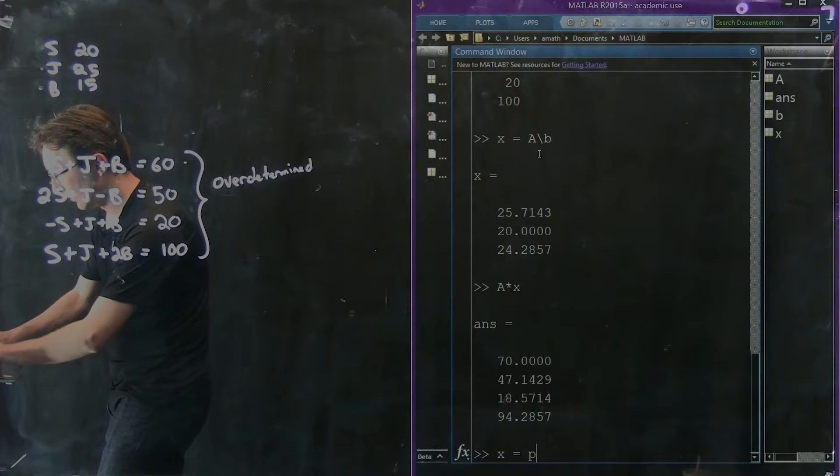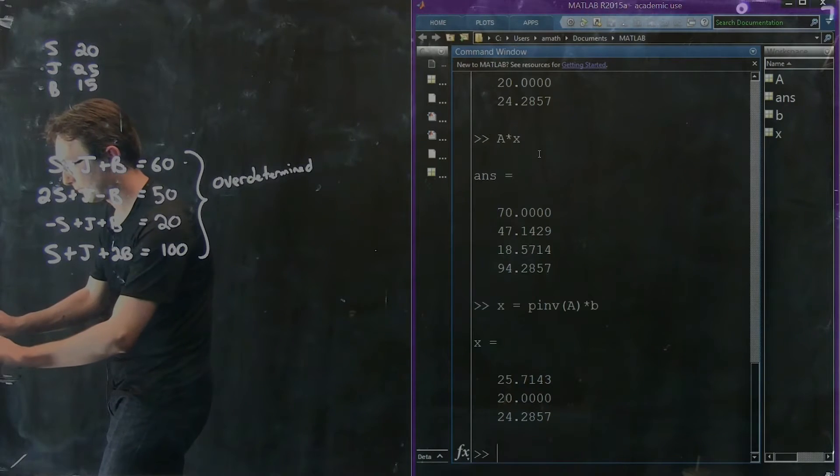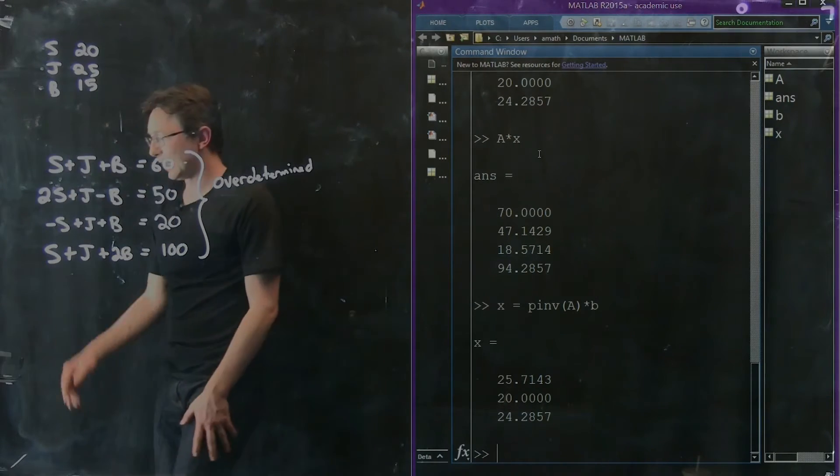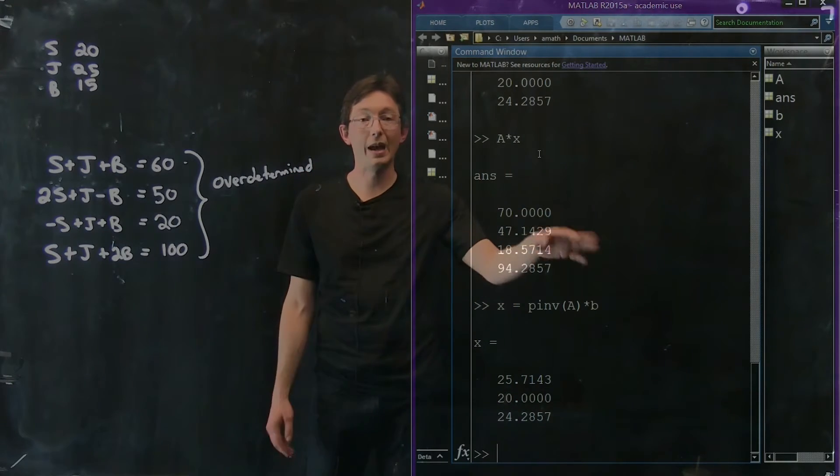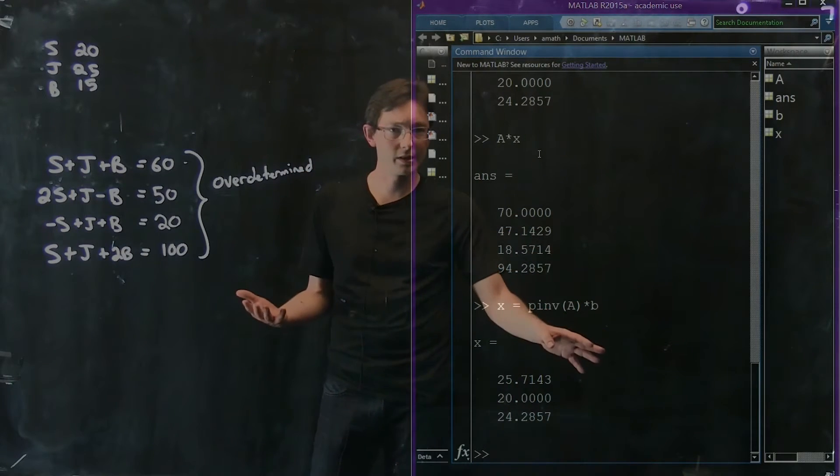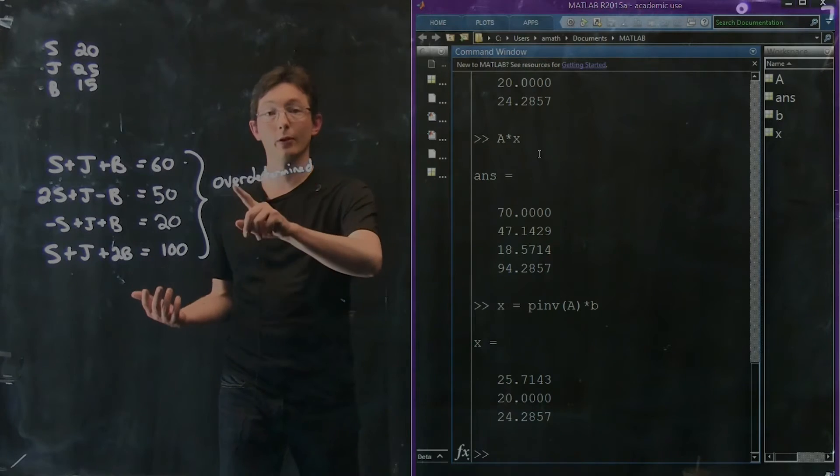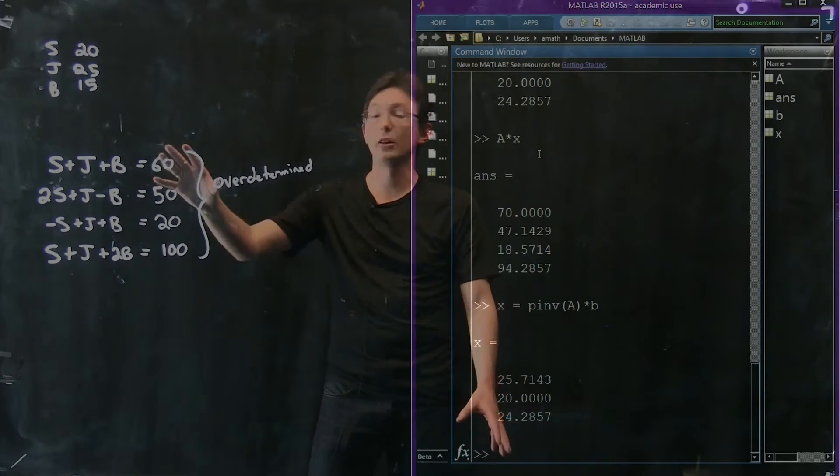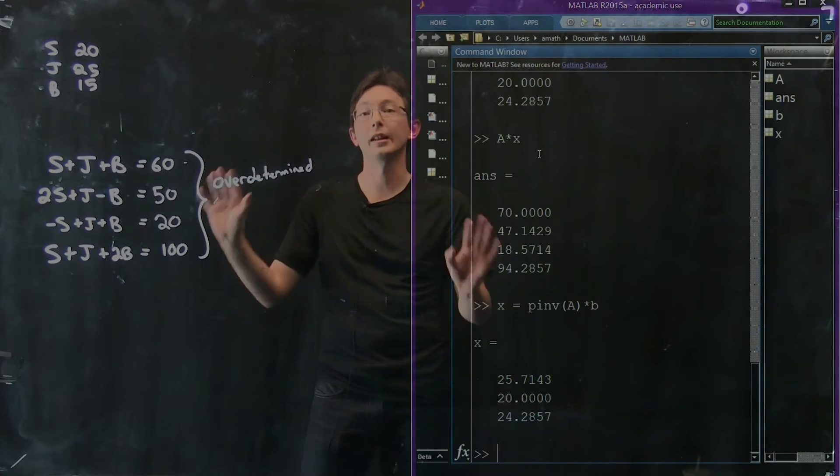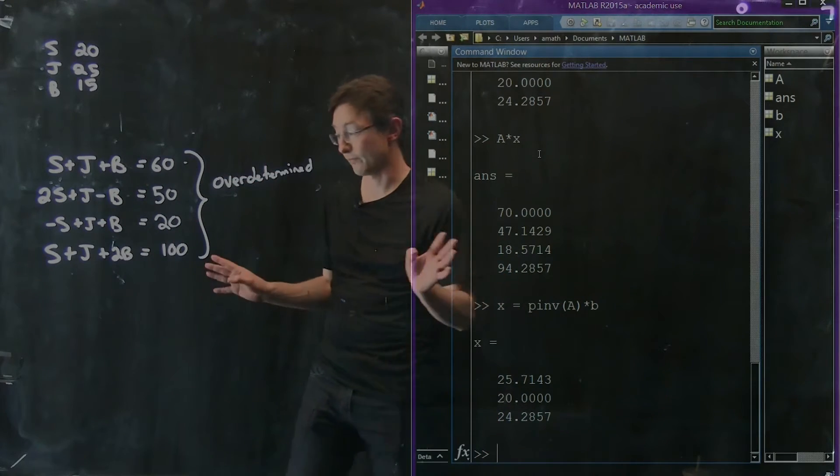Let's see what the pseudo-inverse does. I'm just curious here. Pseudo-inverse of A times B. It gives me, actually it gives me the same answer. So backslash and pseudo-inverse looks like give me the same answer for over-determined systems. And again, it's just trying to do its best job to get close to satisfying all of these, knowing that it can't actually solve all of them.